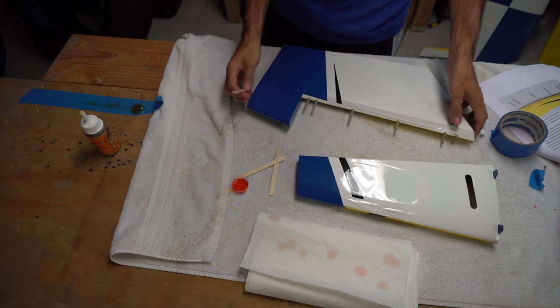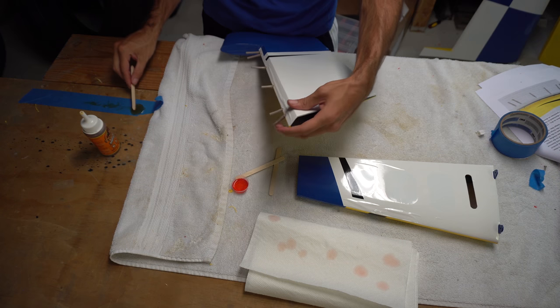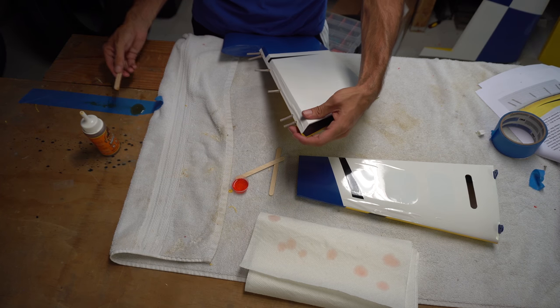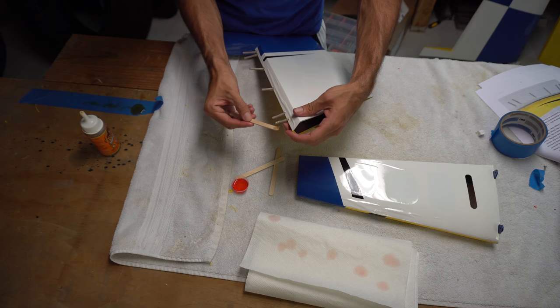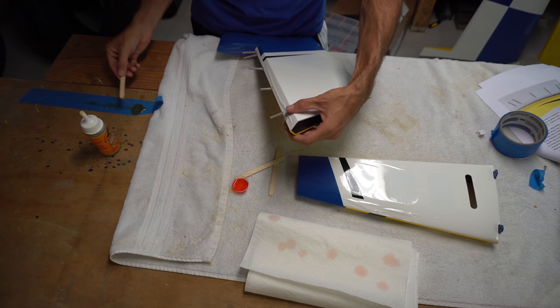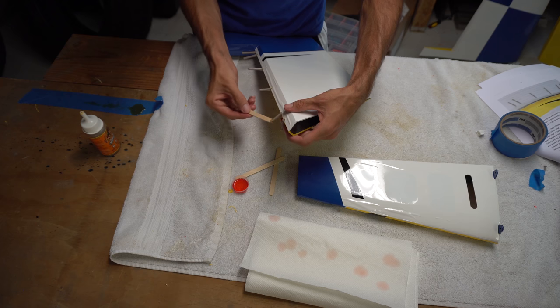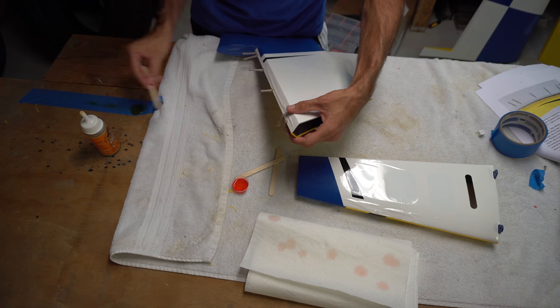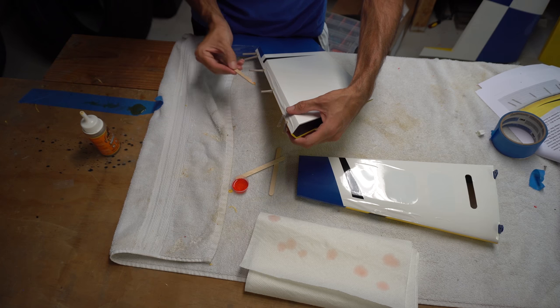Now we're going to put another dab of Gorilla Glue on the blue tape and take our popsicle stick. And take the Gorilla Glue and lightly rub each hinge on the other side with some Gorilla Glue. Again, it doesn't take much on each side. It just takes a light coating on each side of the hinge.